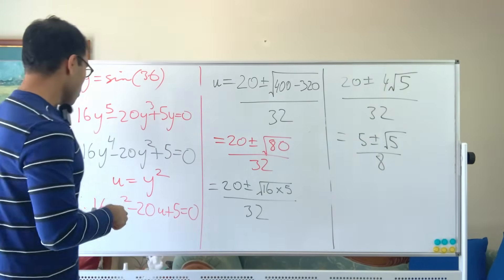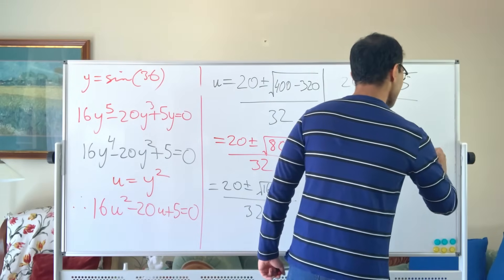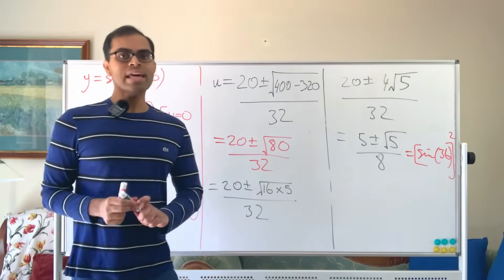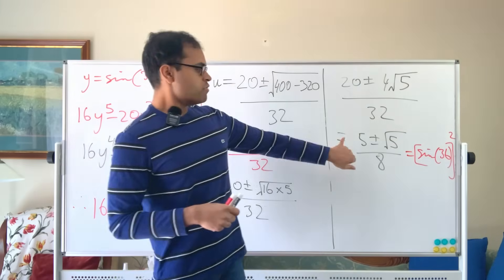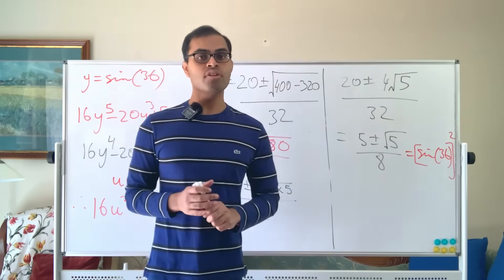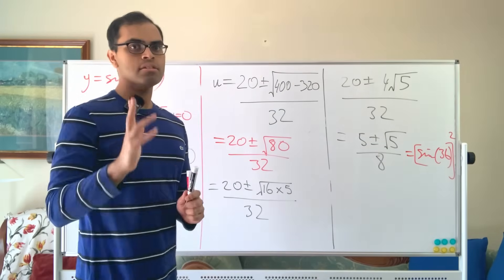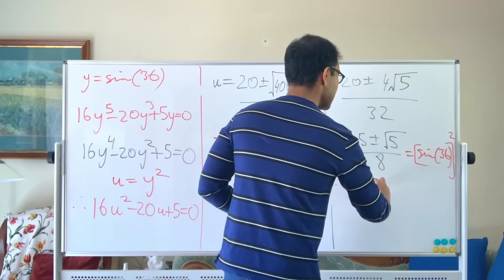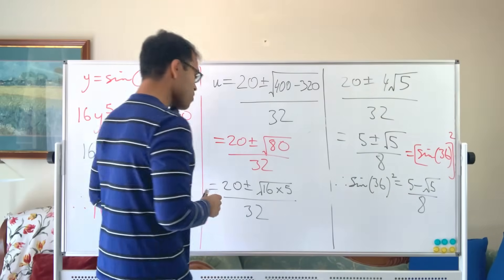y was sine of 36, so this is sin²(36) = (5 ± √5) / 8. Which solution do we take? Since √5 > 2, we have 5 + √5 > 7, giving a value greater than 7/8, which is close to 1. But sine of 36 degrees is not close to 1 — 36 degrees is closer to 0 on the unit circle. So sin²(36) = (5 − √5) / 8.